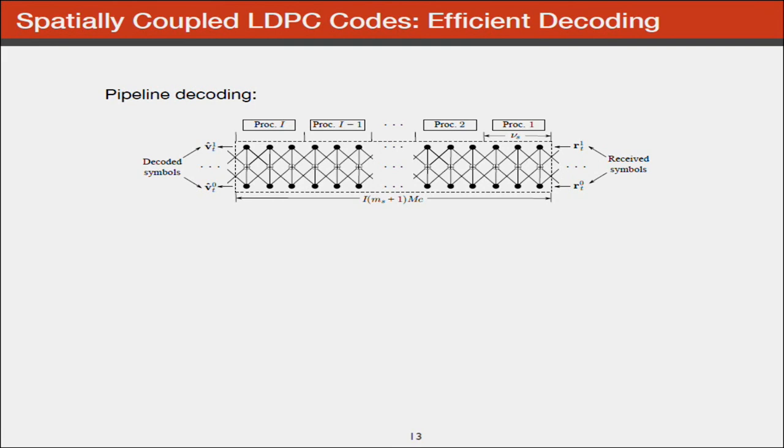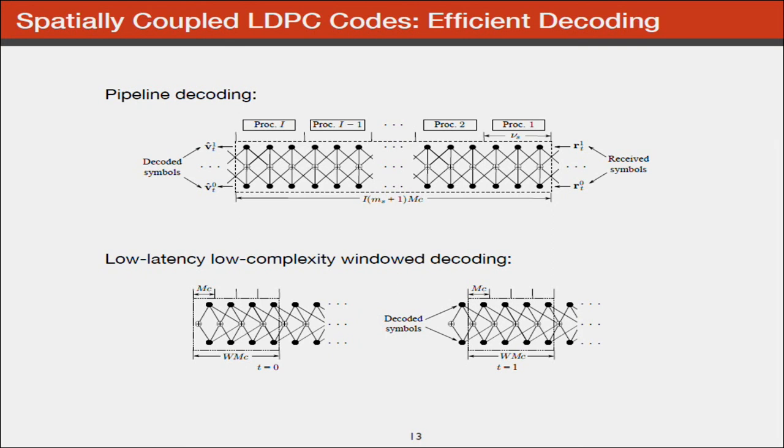Let me skip the decoding details. Let me just look at window decoding. This is the Tanner graph of a coupled code in a slightly different sketch. We can take a small window and slide it over the graph. The window length is the latency of our scheme, and this reduces complexity.